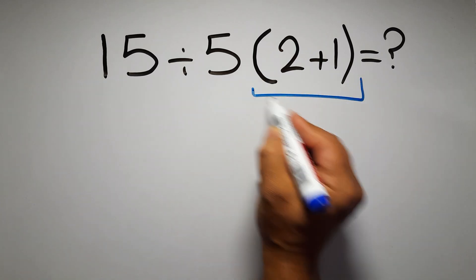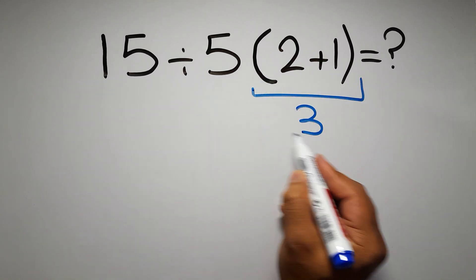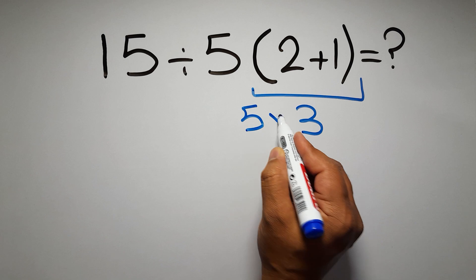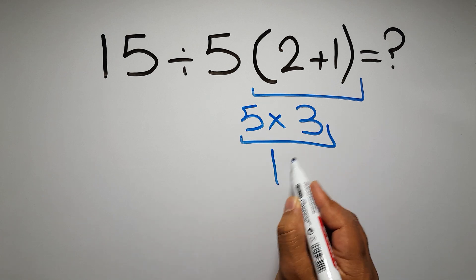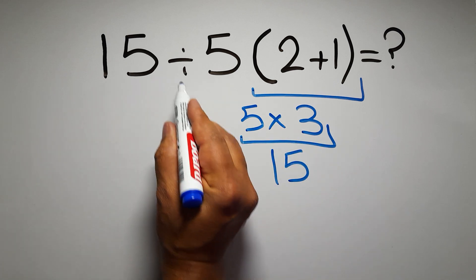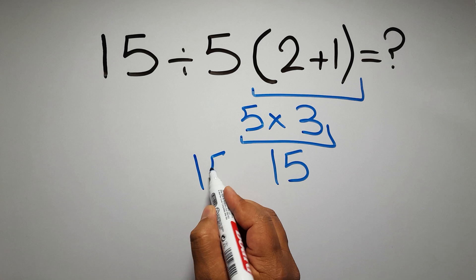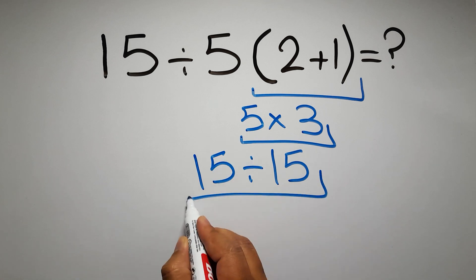2 plus 1 gives us 3, and 5 times 3 equals 15, so 15 divided by 15 gives us 1, but this answer is not correct.